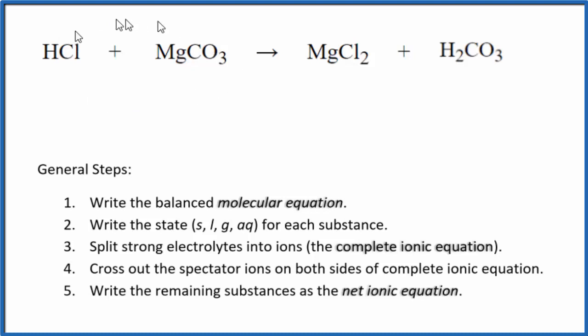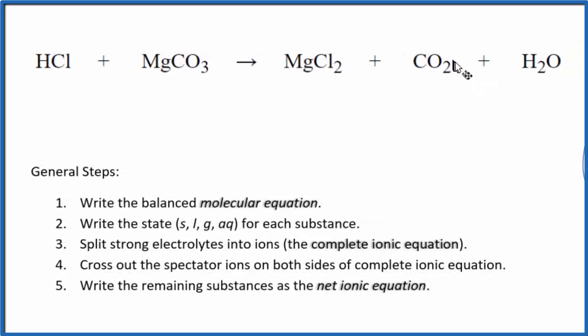So when these two substances react, initially we get magnesium chloride and H2CO3, carbonic acid. But this carbonic acid will break down, and we'll end up with carbon dioxide and water. So this is the equation we're going to use when we balance the net ionic equation for HCl plus MgCO3.